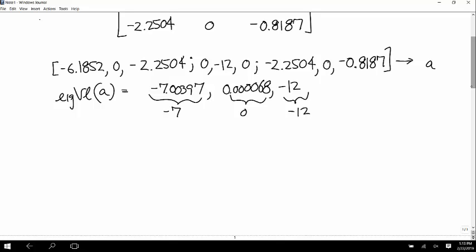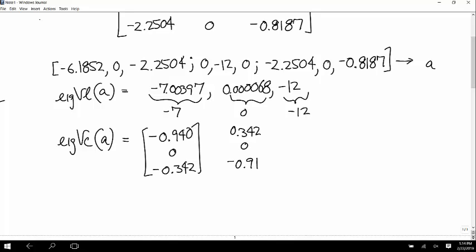And then, if it asks for the corresponding axes, do eigenvector on that same matrix, A. And you get negative 0.940, 0, negative 0.342. That corresponds to the negative 7.00. Positive 0.342, 0, negative 0.940, that corresponds to the 0.00, and then the last one is 0, 1, 0.00.